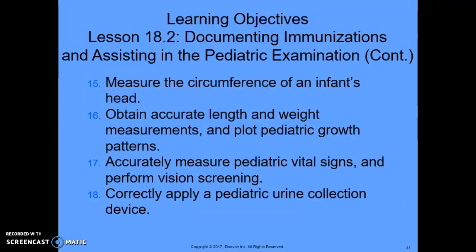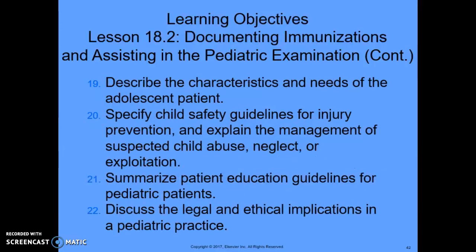Additional objectives include: measure the circumference of an infant's head, obtain accurate length and weight measurements, and plot pediatric growth patterns. We will also accurately measure pediatric vital signs and perform vision screening, correctly apply a pediatric urine collection device, describe the characteristics and needs of the adolescent patient, specify child safety guidelines for injury prevention, explain the management of suspected child abuse, neglect, or exploitation, summarize patient education guidelines for pediatric patients, and discuss the legal and ethical implications in pediatric practice.